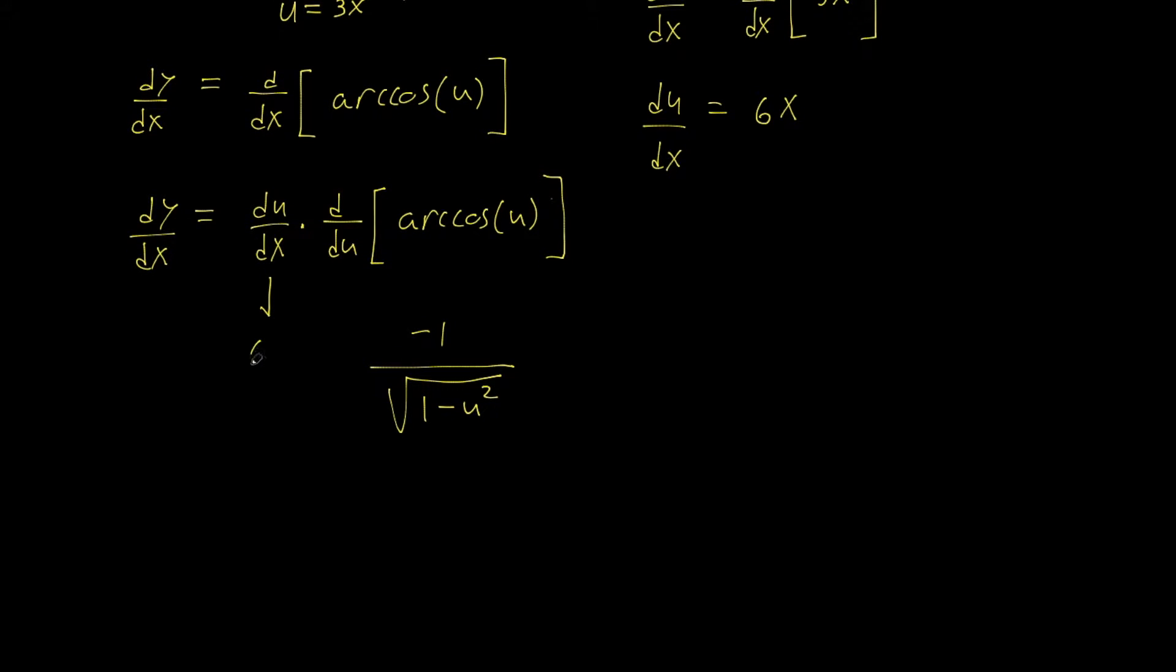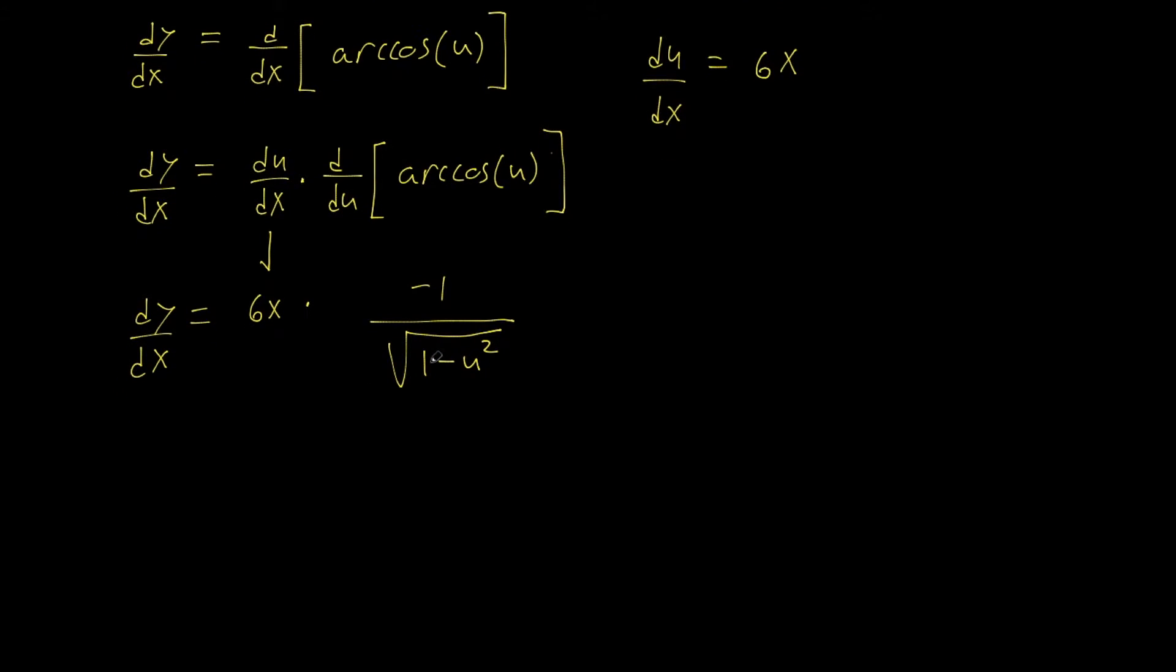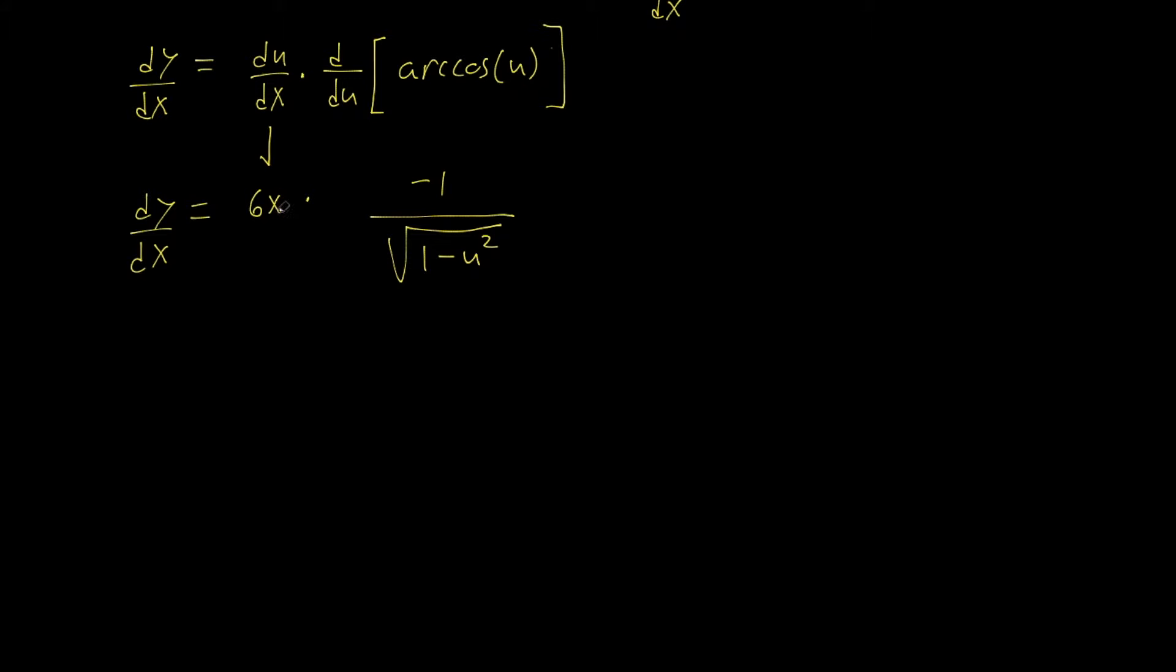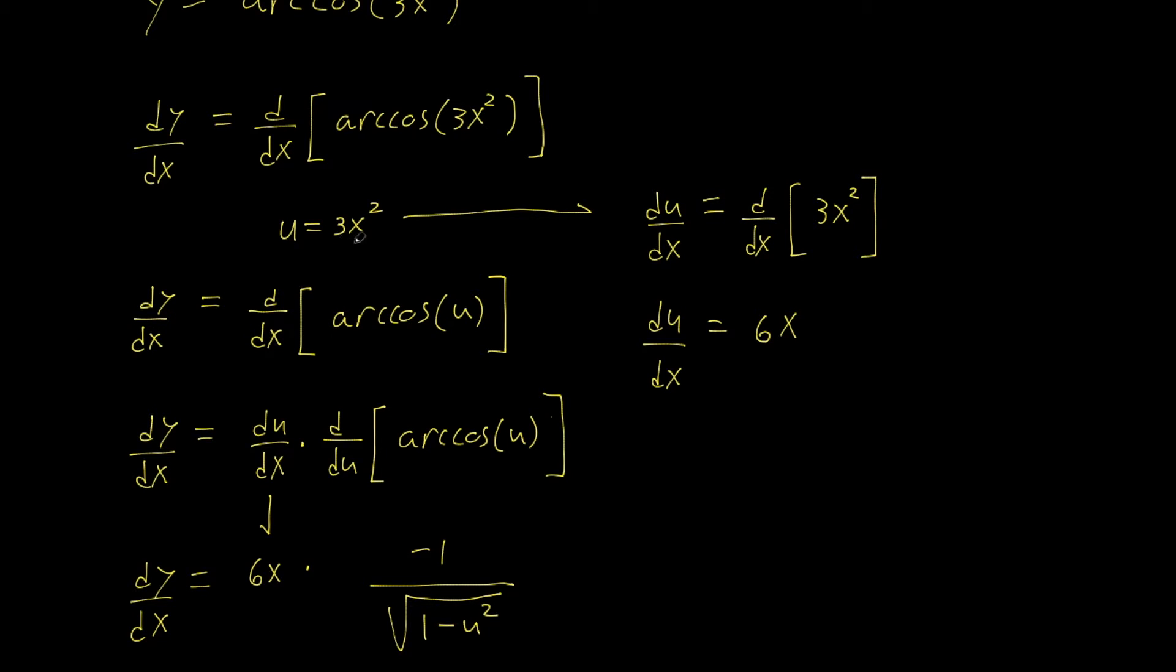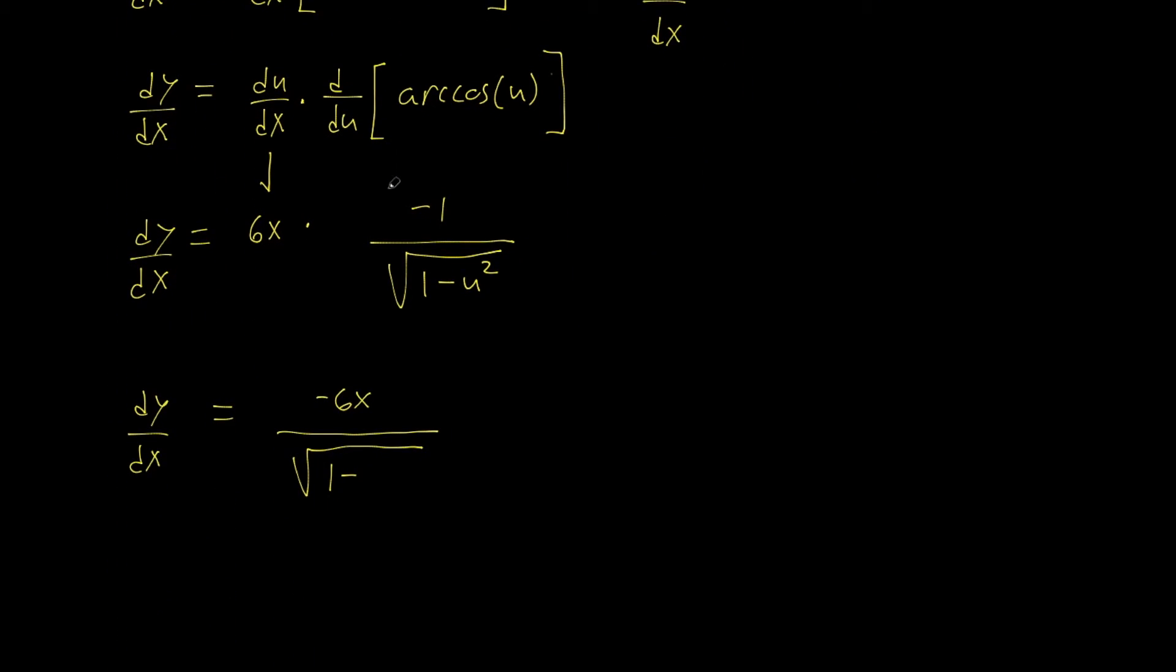So coming back down here, we can say this equals 6x times dy/dx equals all this bit. And so our final step is going to be making this multiplication. So dy/dx equals 6x times negative 1, which is going to be negative 6x over square root of 1 minus u squared, which can be replaced with our u value. u is equal to 3x squared, so we have 3x squared squared.